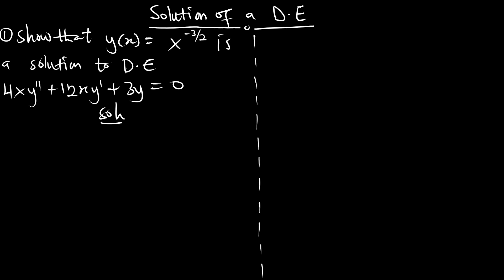Let's show if this is a solution to the differential equation. Inside the differential equation, we have the first derivative y' and also the second derivative. So let's find the first derivative. We know our y(x) is x^(-3/2).